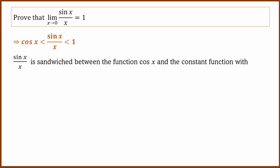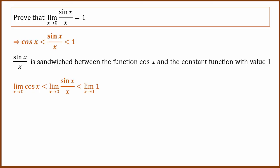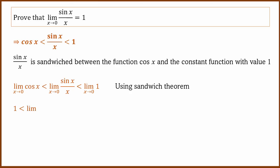So sin x/x is sandwiched between the constant function with value 1 and cos x. We apply the limit as x tends to 0 to all three. The constant limit is 1, and the limit of cos x as x tends to 0 equals cos 0, which is 1. So by the sandwich theorem, the limit is 1.